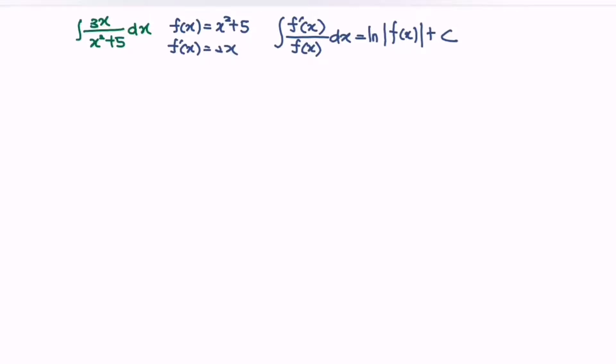So notice that we have 2x as a numerator and x squared plus 5 as a denominator. So what we have to do is make sure we have the situation f prime x for the numerator and f(x) for the denominator. Then only here we can use the integration of special function.